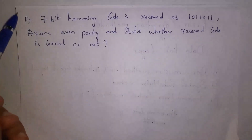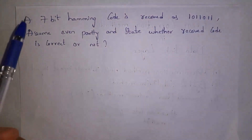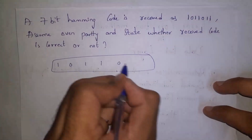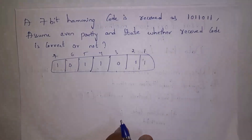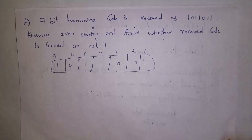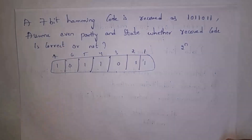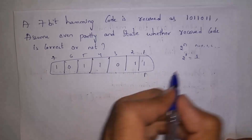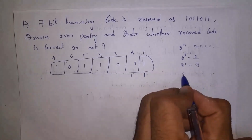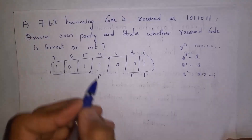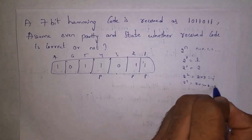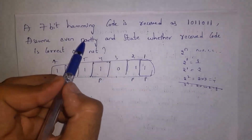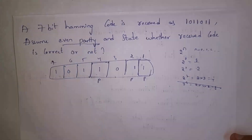Second example: a 7-bit Hamming code received is 1 0 1 1 1 1 1. Assume even parity and determine whether the received code is correct. Parity bit positions are found using 2^n: positions 1, 2, and 4 (P1, P2, P4). Even parity means all parity groups must contain an even number of 1s; if any group has an odd number of 1s, there is an error.